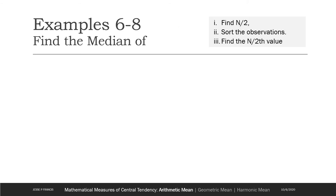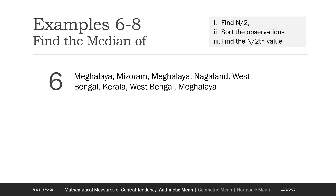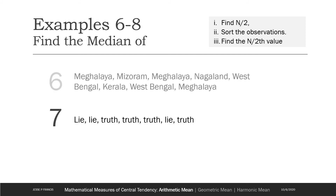Let's look at some more examples for better insights about median. Example 6 simply lists names of states in India. Can we order them in any way? With just names we can't. Since there is no order — this is a nominal scale distribution — we cannot find the median.